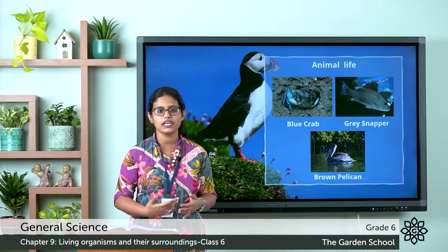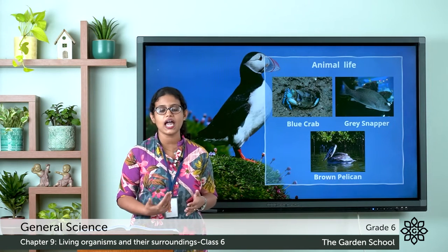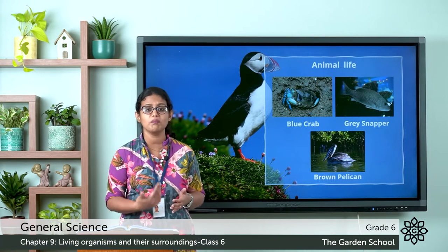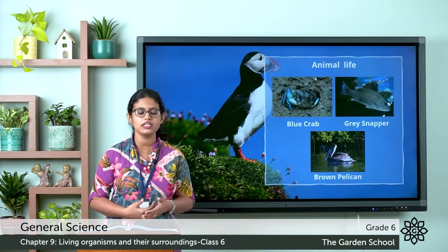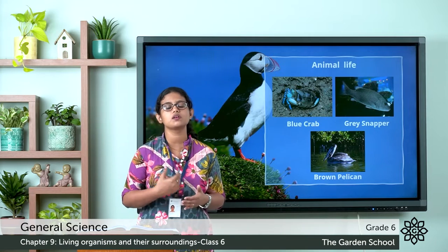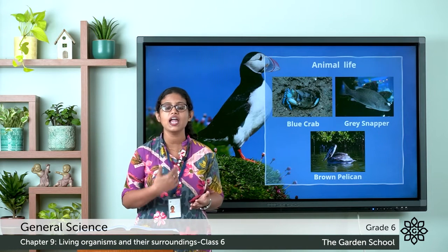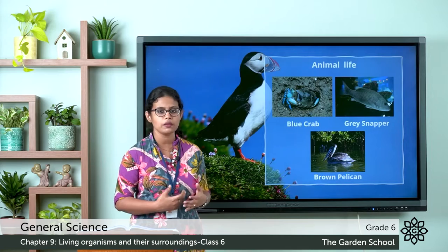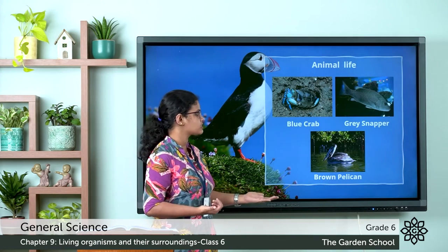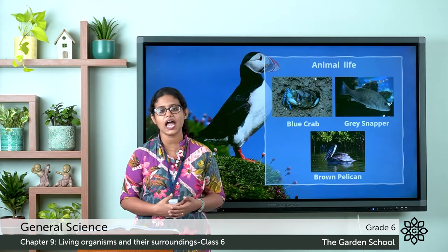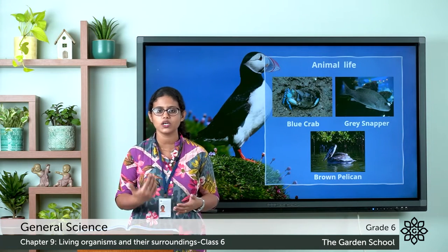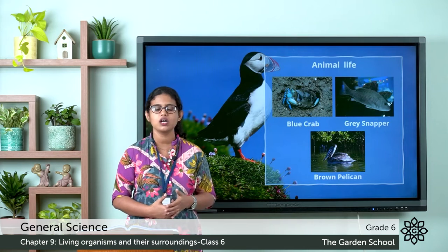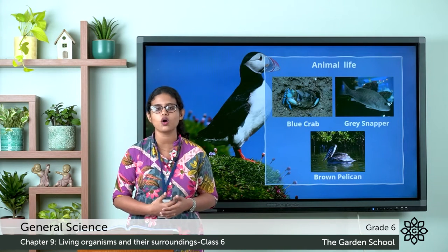Now, what about the animal life? There are different kinds of marine animals in mangrove swamps. Mangrove swamps are a habitat for many marine animals, and many fish use mangrove swamps as feeding and breeding grounds. Different animals that live in mangrove swamps include blue crab, grey snapper, and brown pelican. So that is about mangrove swamps as a saltwater habitat.